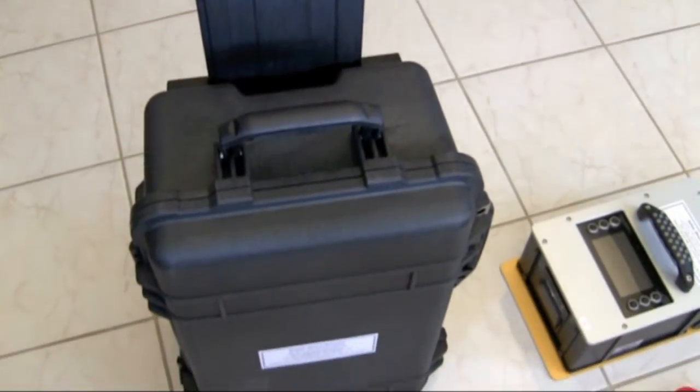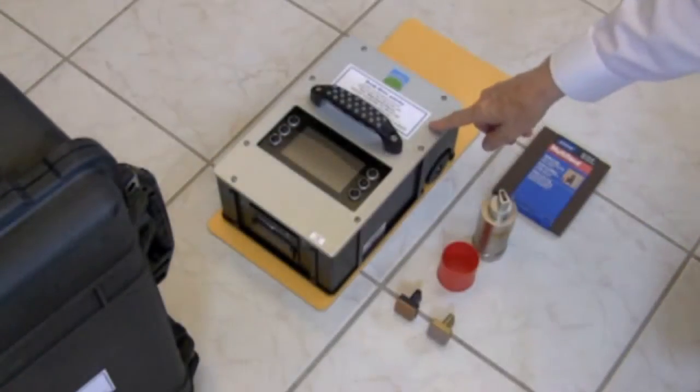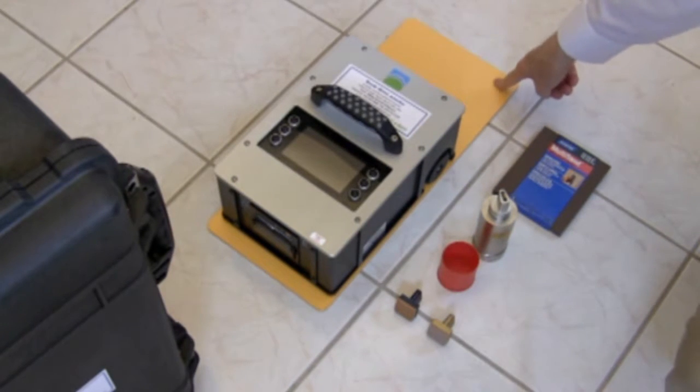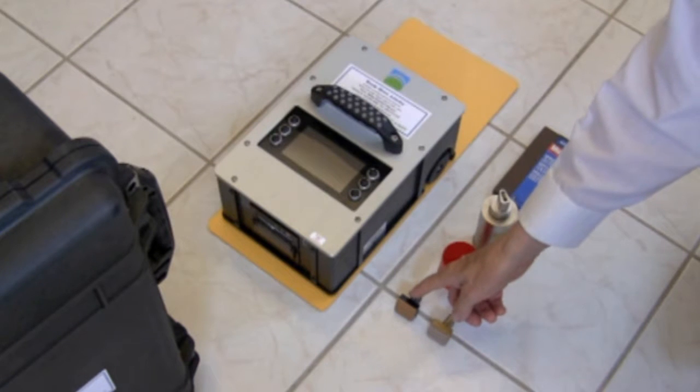It comes in a sturdy, waterproof Pelican brand case with wheels. Inside the case, we have the Binary Output Tribometer, or BOT, a standard reference tile for verifying the BOT is working properly prior to beginning testing.